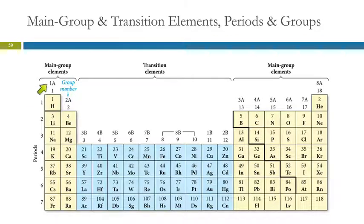But in the United States, we often use this other one, where the main group elements have the letter A. The transition elements have the letter B. These numbers actually I don't find very useful at all. But the A numbers are very useful.